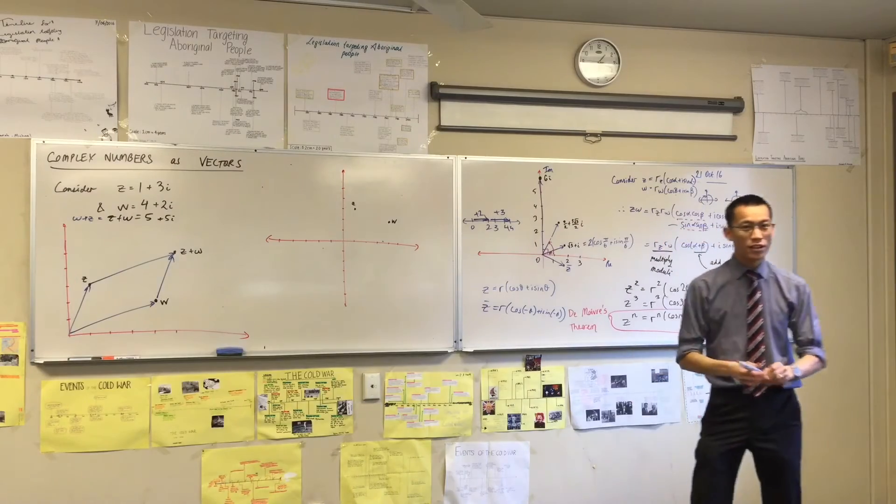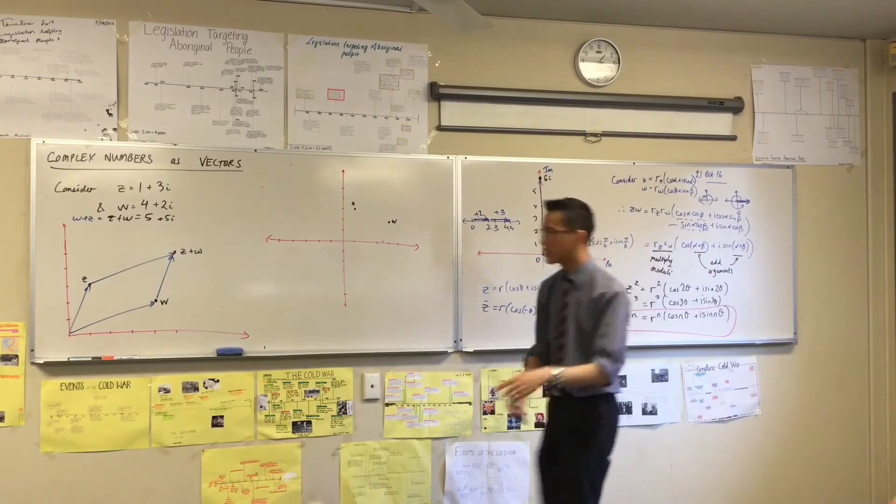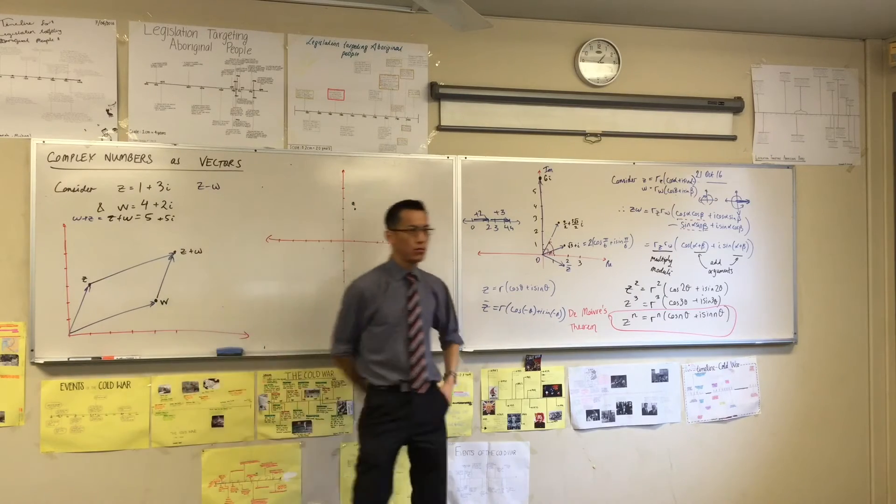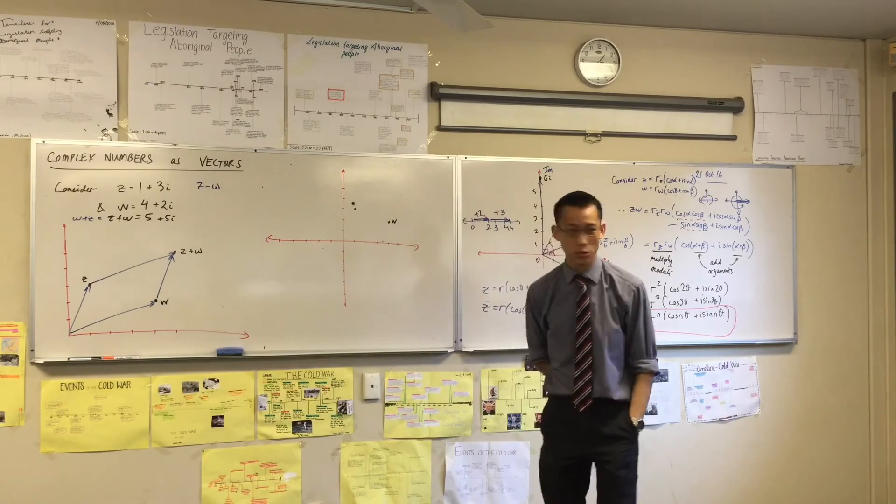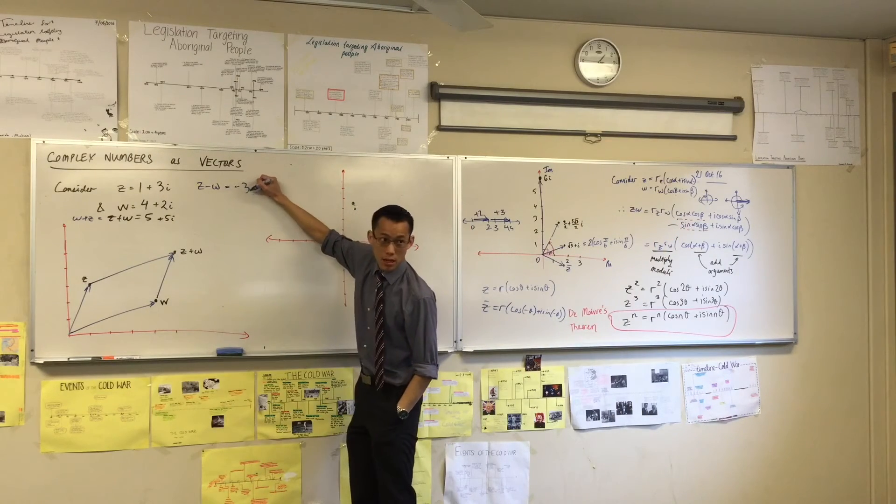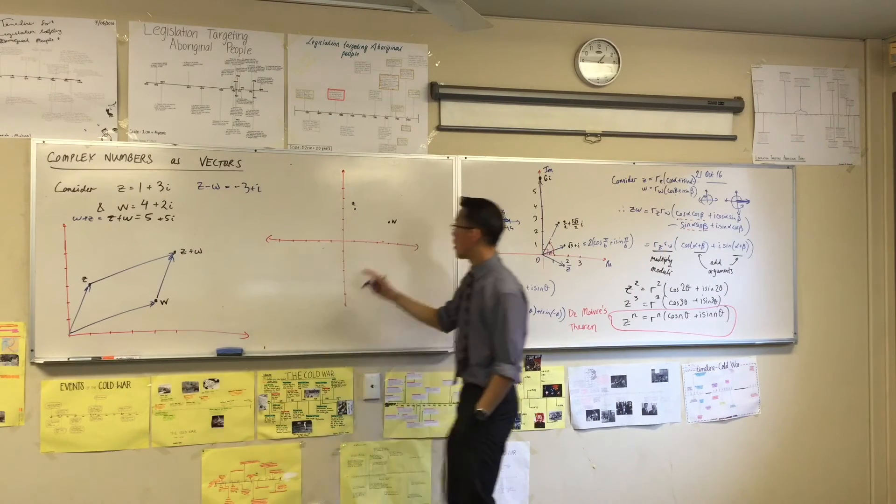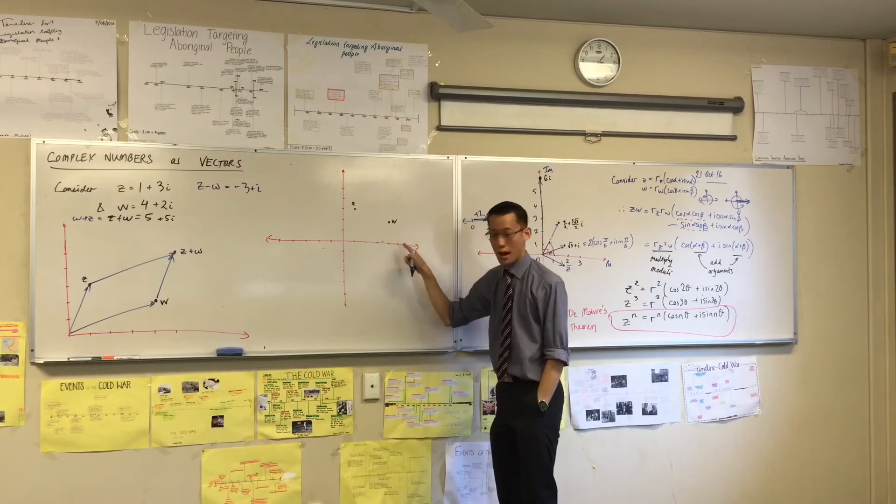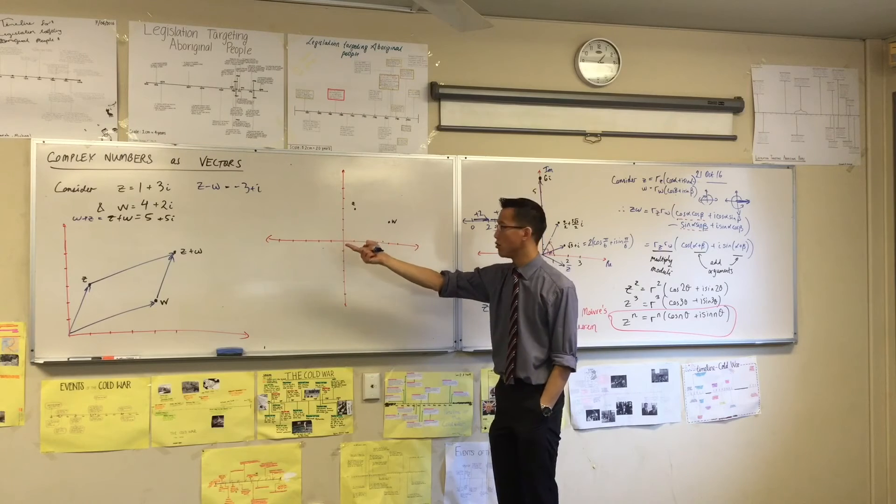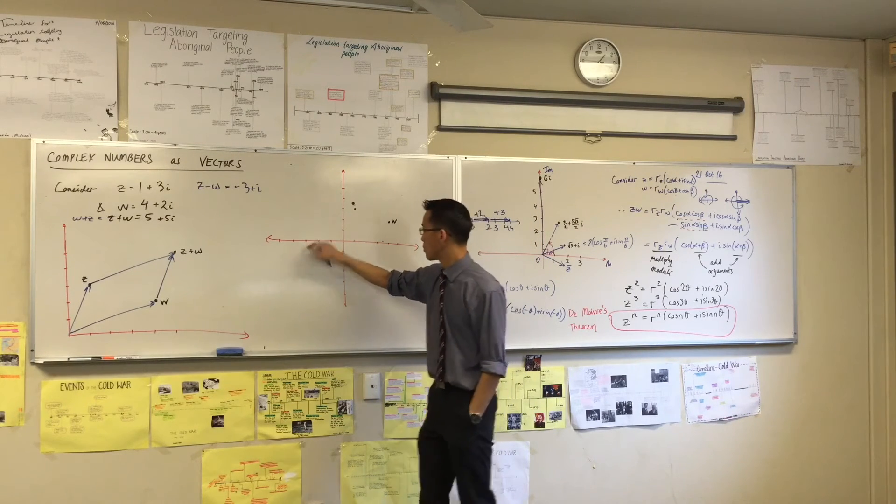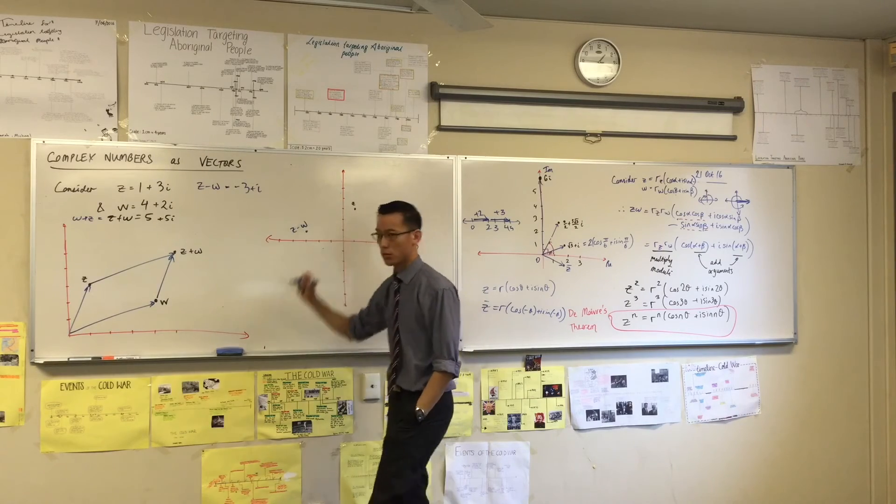Now this is really cool. This unlocks a whole world for you. For instance, I asked you for Z plus W. What's Z minus W? Just look at it. Look at the numbers. Looks like it's going to be minus 3 plus i. Now you'll need more quadrants this time. If that's where Z and W are, Z minus W is going to be minus 3, 1, 2, 3, plus i. Here's Z minus W.